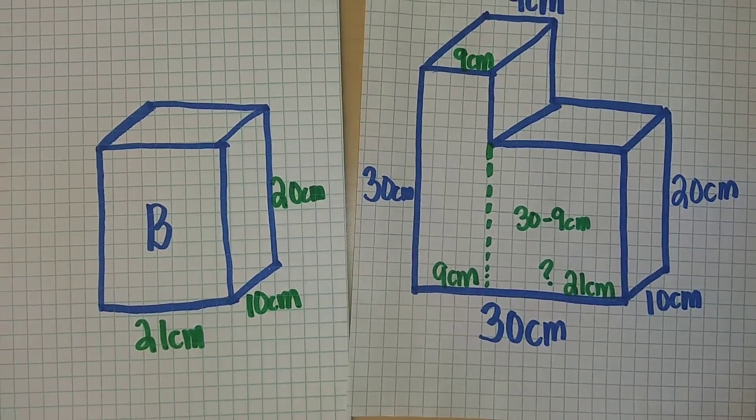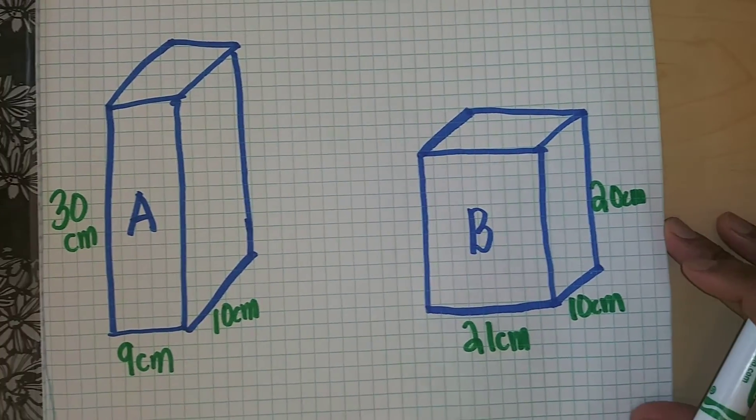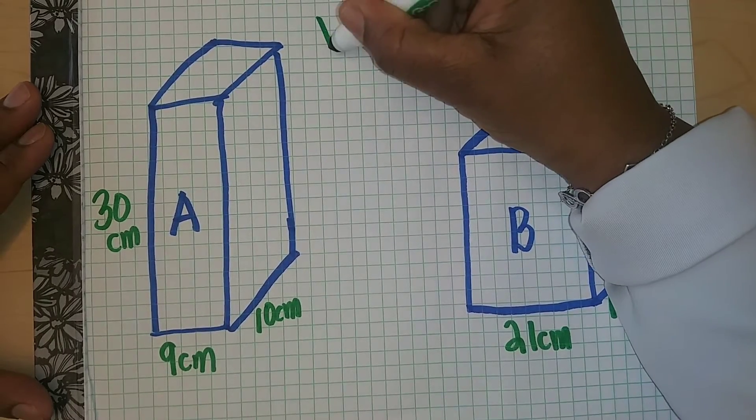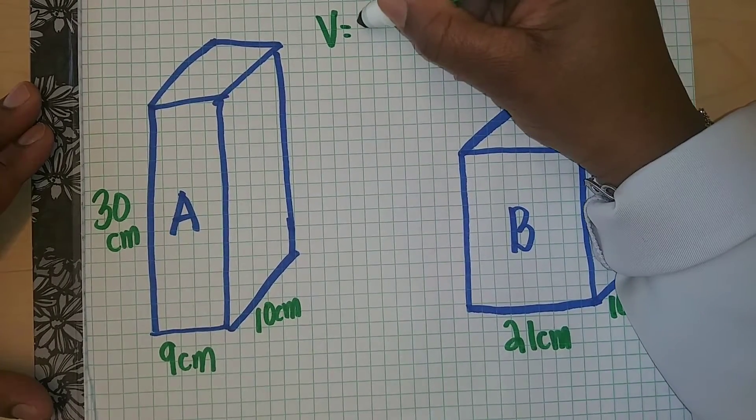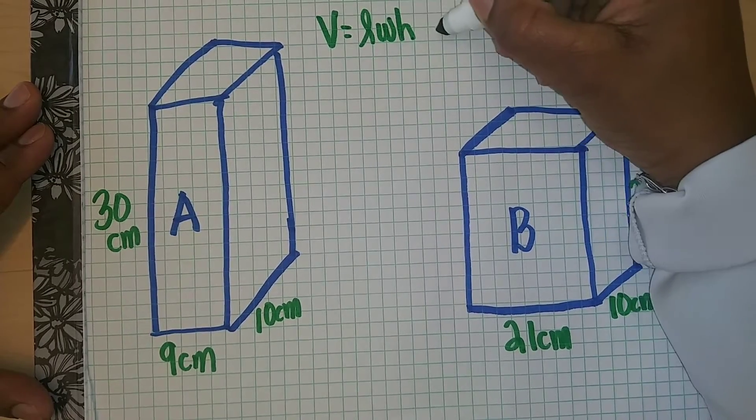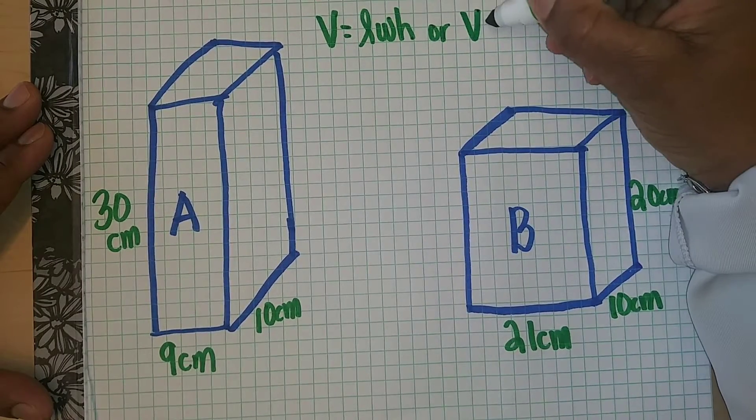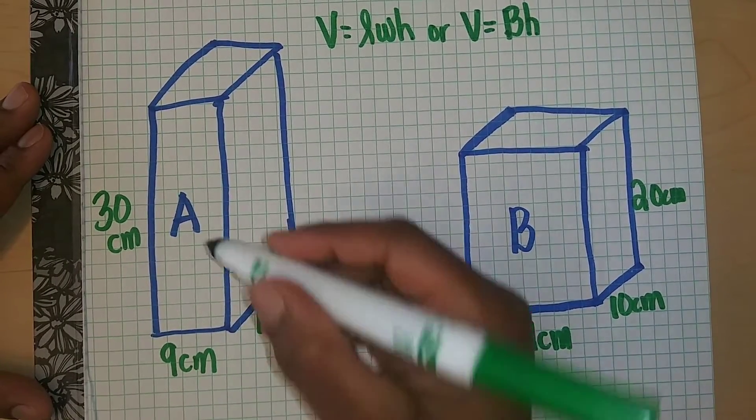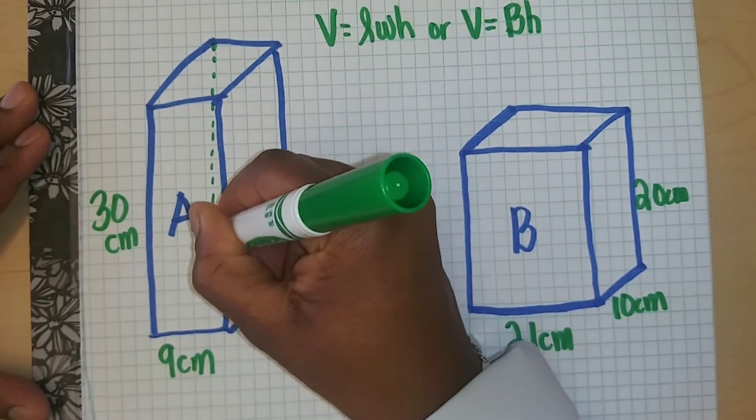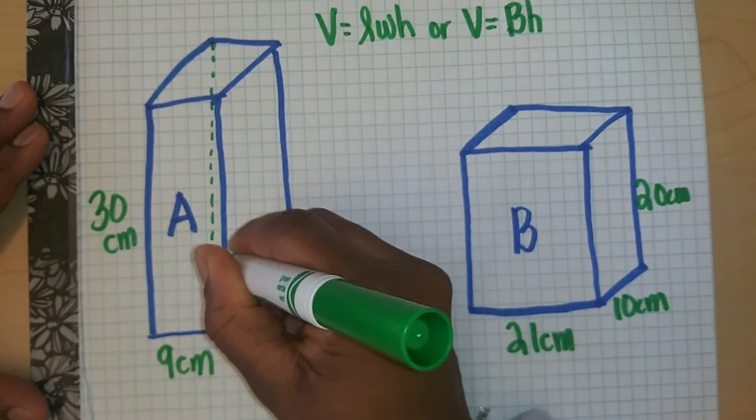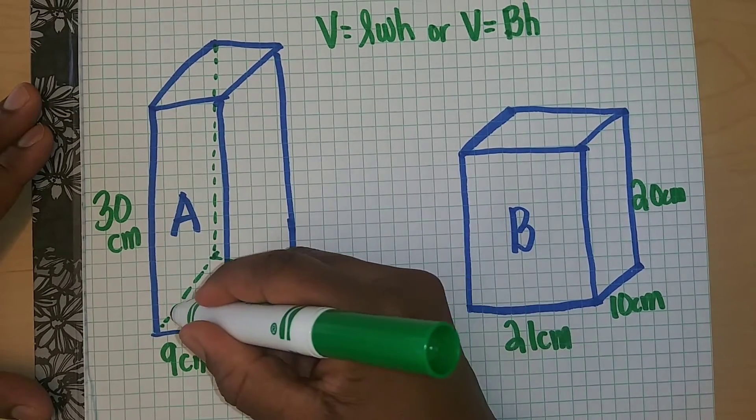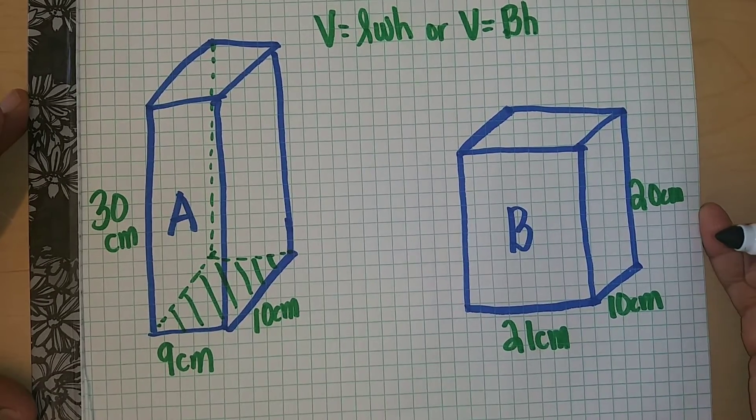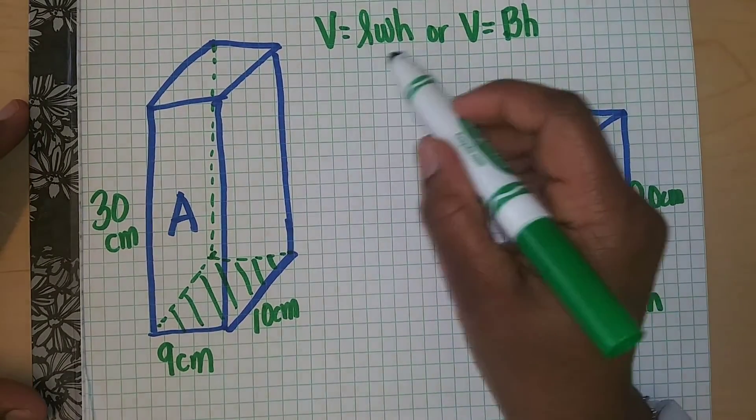Now that we have the dimensions we need to figure out how we can find the volume of each of these rectangular prisms. There's formulas that you can use: volume is equal to length times width times height, or volume is the same as base area times height. Base area is the amount of area if you have your prism, it's the amount of area on the base times the height. Or you can just use length times width times height.